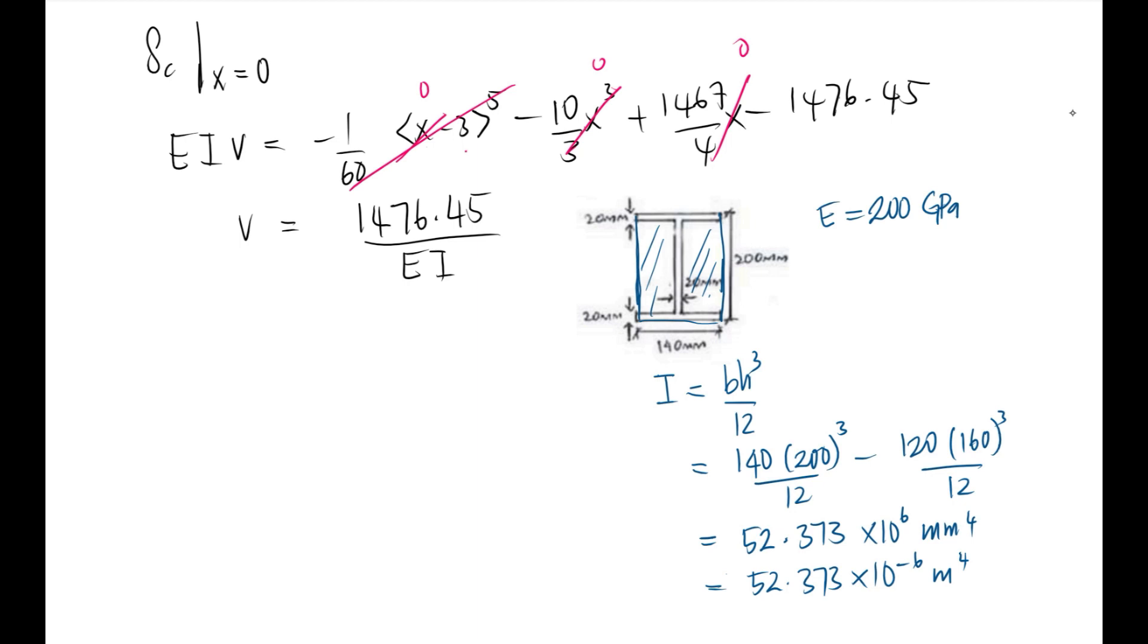Now can calculate by substituting E and I into the deflection equation: v = 1476.45 divided by 200 × 10⁹ times 52.373 × 10⁻⁶. Therefore we get negative 0.141 meters, or 141 millimeters going down. This is the value of deflection at the free end of the cantilever beam.